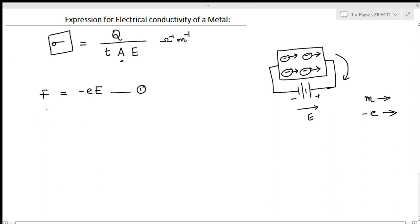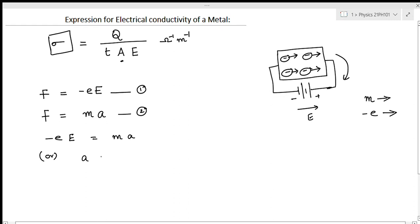By Newton's second law of motion, the force is F equals ma, where a is the acceleration. This is equation number two. Comparing equations one and two, minus eE equals ma, therefore acceleration a equals eE divided by m. Let this be equation number three.